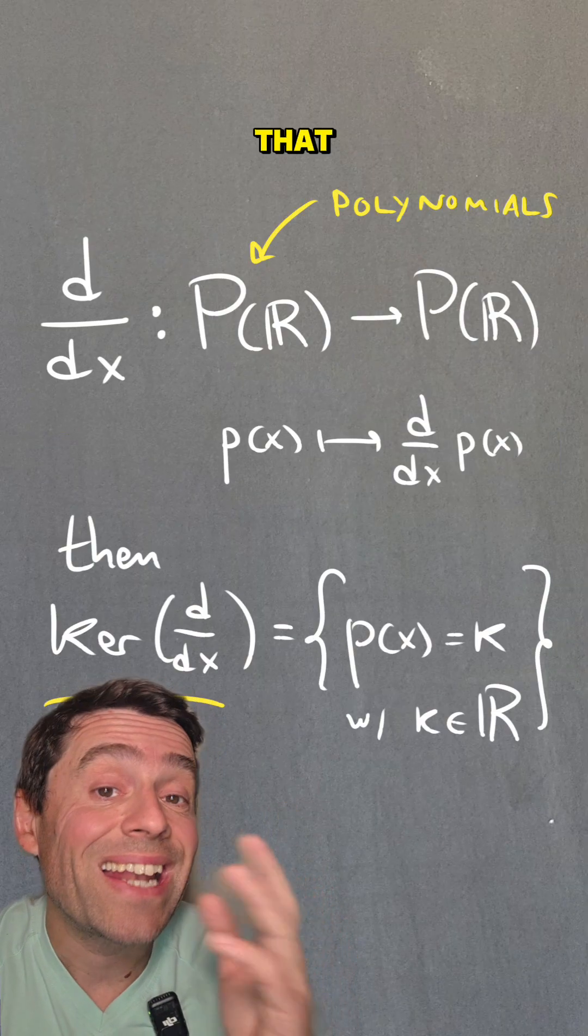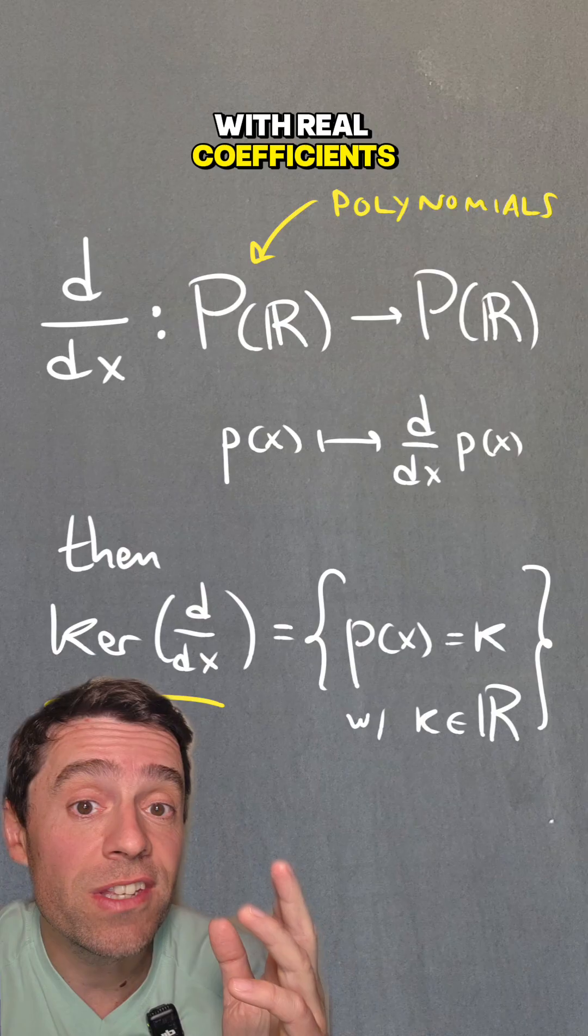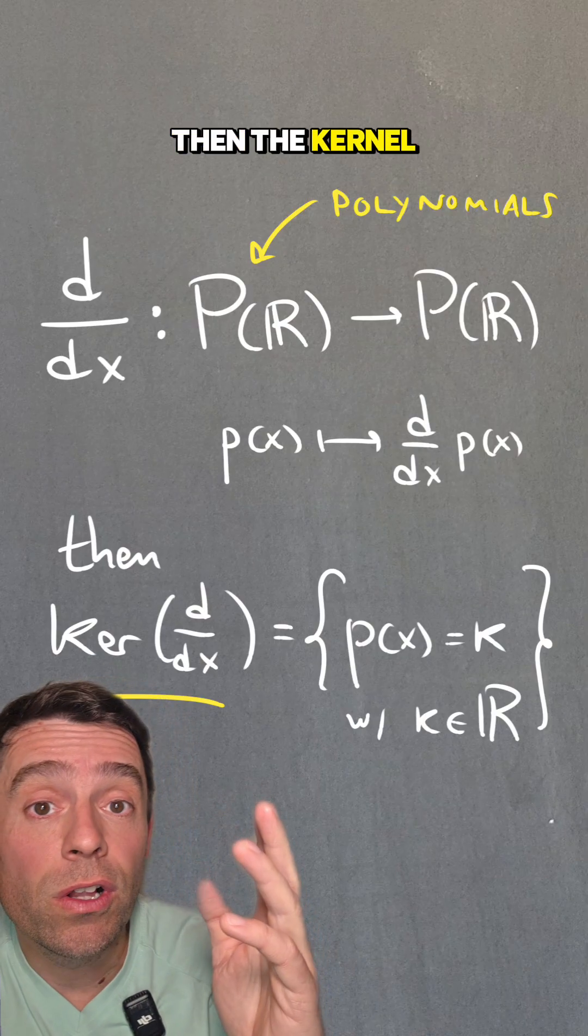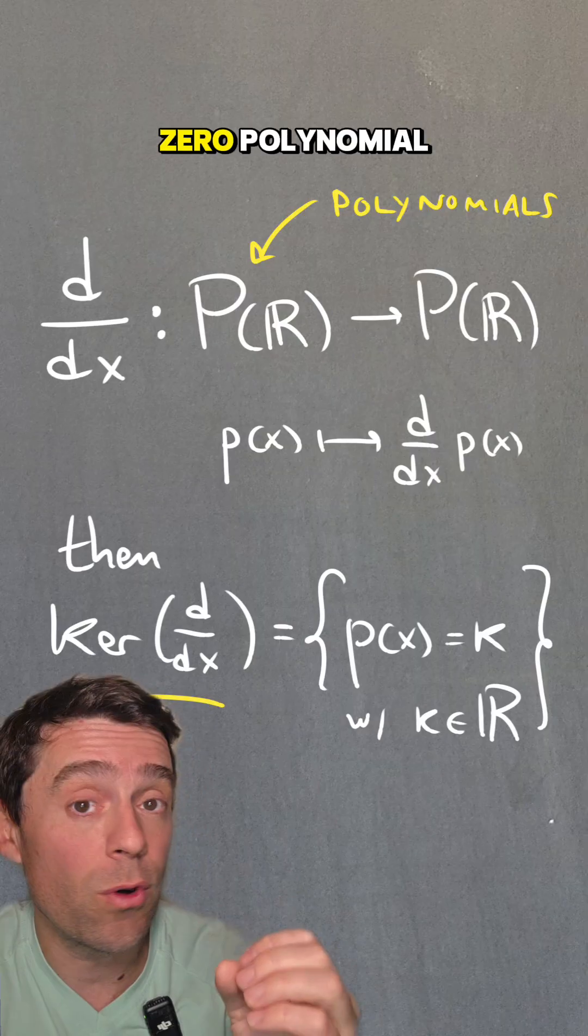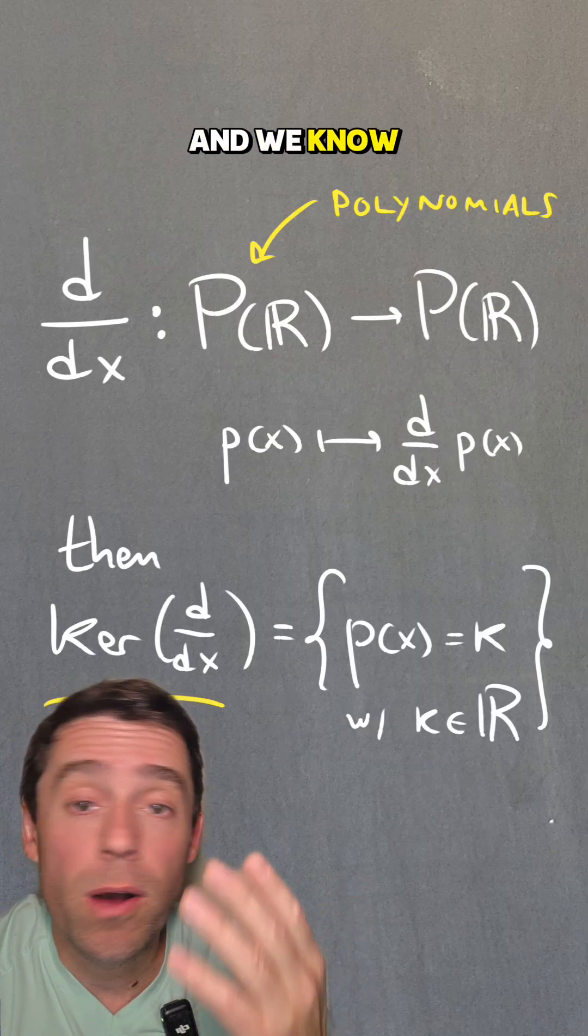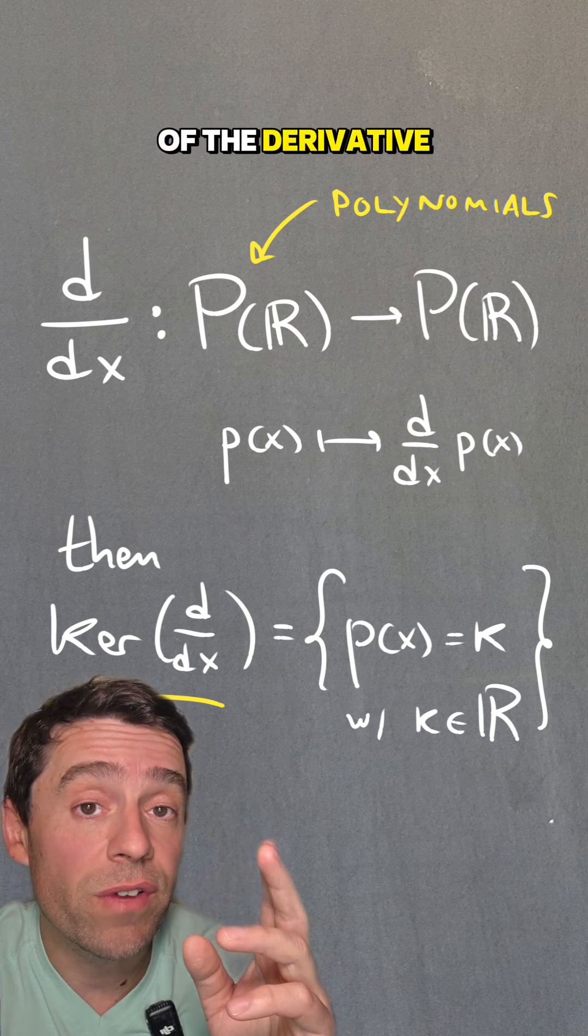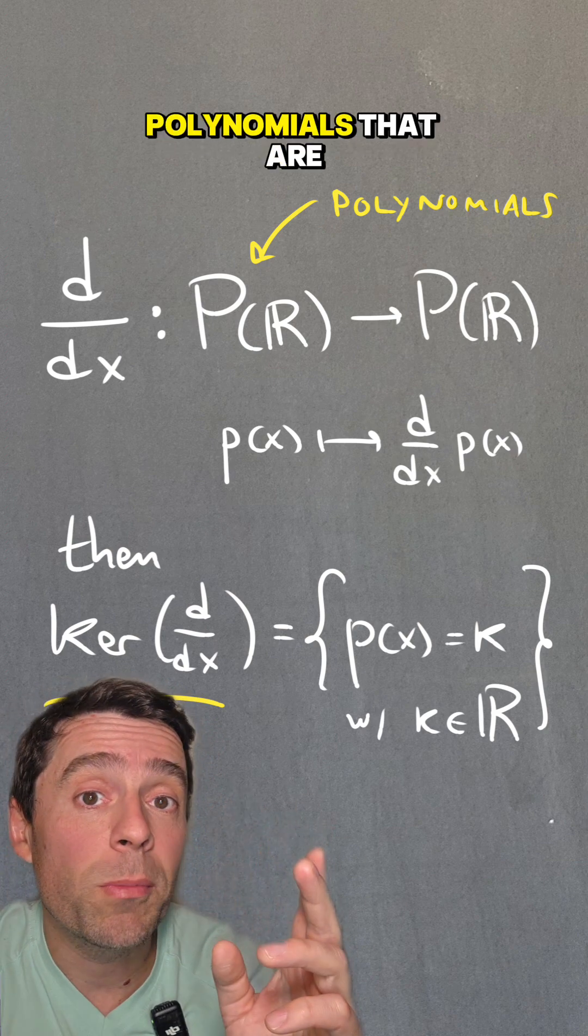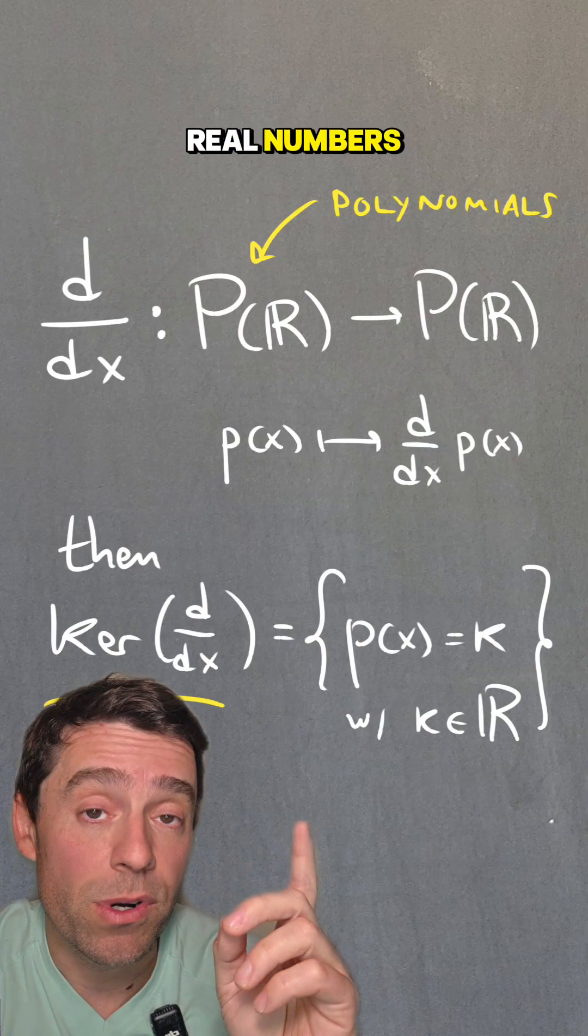For example, if that linear map is the derivative of polynomials with real coefficients, then the kernel will be those polynomials such that when I take the derivative, I get the zero polynomial, and we know from calculus that those are the constant polynomials, so the kernel of the derivative map is exactly those polynomials that are constants, equal to k in the real numbers.